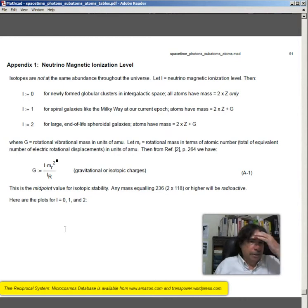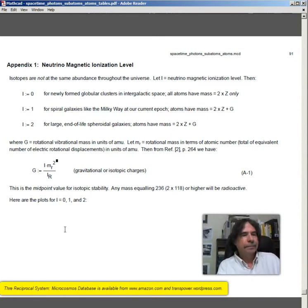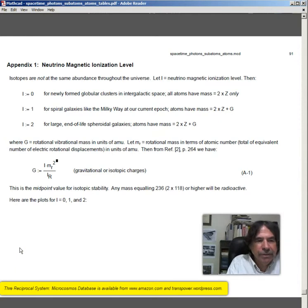Now, but what is g? g is the number of rotational vibrational mass in units of amu. Notice that it's an amu, which is really the natural unit, not u. But m sub r equals rotational mass in terms of atomic number, total equivalent number of electric rotational displacements in units of amu. Then, from reference to page 264, we have g equals i times m sub r squared divided by i sub r, where i sub r is the interregional ratio.